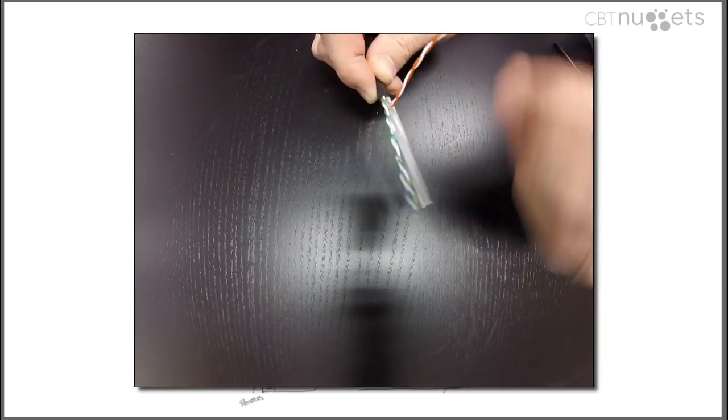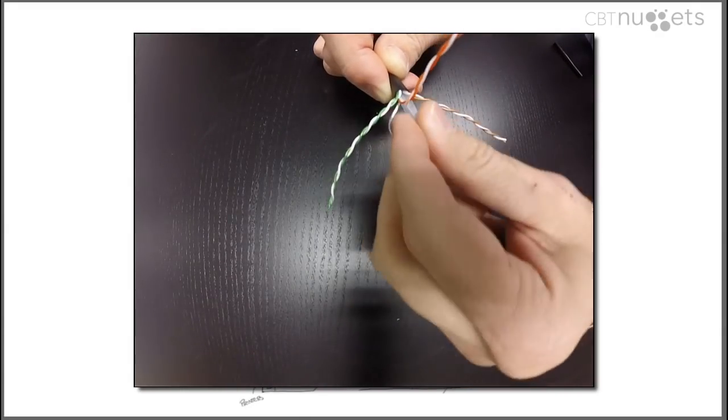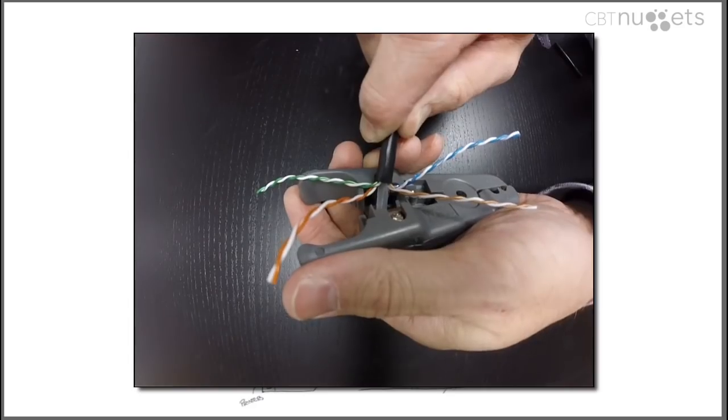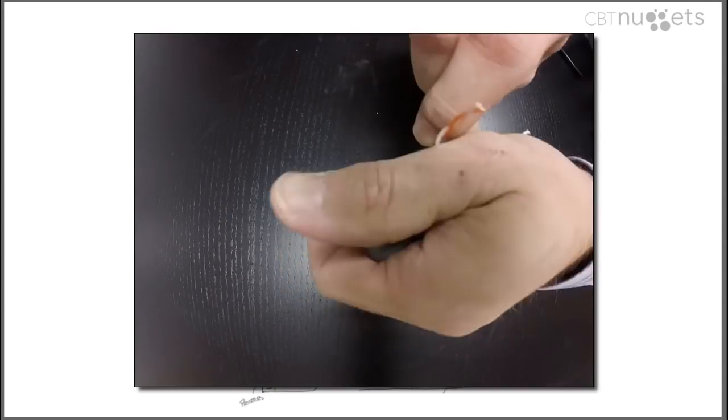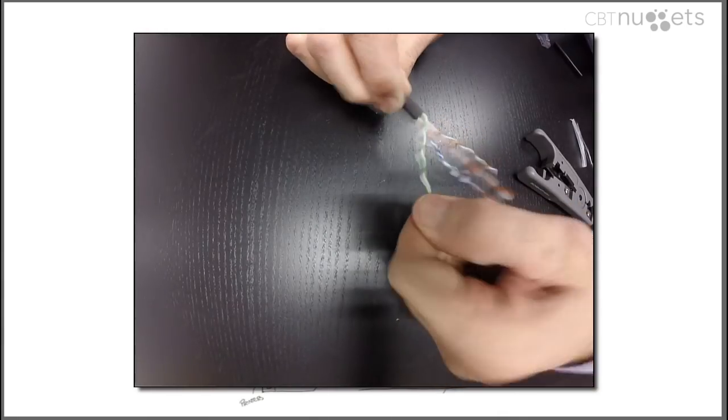Now I'm going to separate each one of these twisted pairs of wires. That allows me to get to this big chunk of insulation in the middle. I'm going to use the cable cutter to chop that right out of there, and then I'll untwist each one of these pairs of wires.